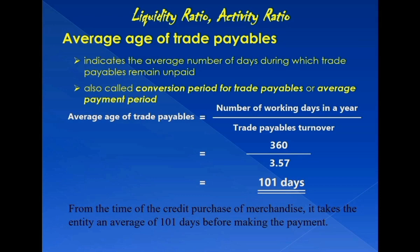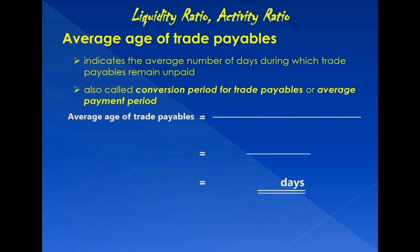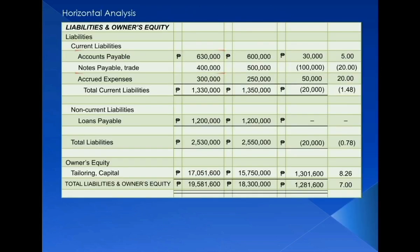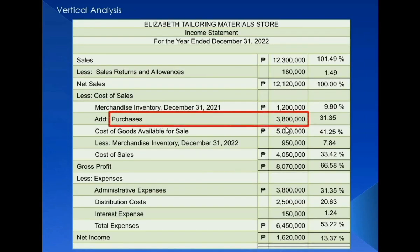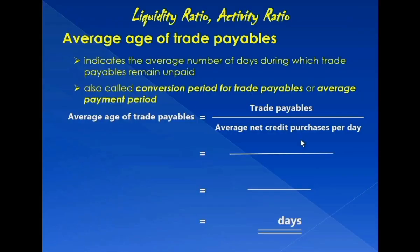In some textbooks, another formula is used to compute the average age of trade payables: trade payables divided by the average net credit purchases per day. The trade payables at the end of 2022 consisted of accounts payable of P630,000 and trade notes payable of P400,000, while net credit purchases amounted to P3.8 million. Notice that the denominator must be the average net credit purchases per day, not the full-year amount.